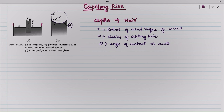The water wets the tube, and thus the surface of the water in the capillary is concave in shape. This means that there is a pressure difference between the two sides of the top surface.